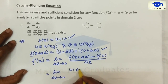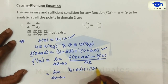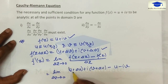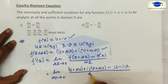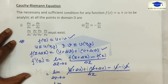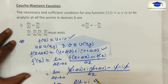We have (u + Δu + i(v + Δv)) minus (u + iv), all over Δz. Cancelling these terms, we are left with Δu over Δz plus i times Δv over Δz.